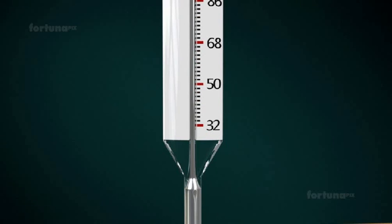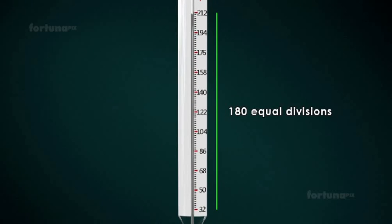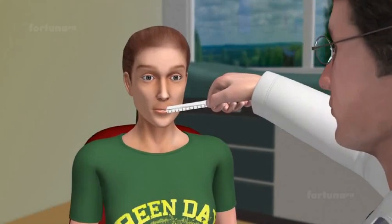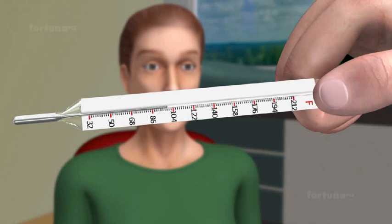Between 32 and 212 degrees there will be 180 equal divisions. On the Fahrenheit scale the normal body temperature of humans will be 98.6 degrees Fahrenheit which we would write simply as 98.6 degrees F.